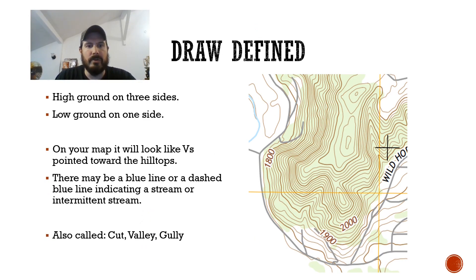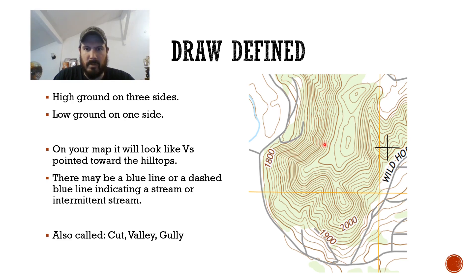Our next definition is going to be a draw. As we're standing on the ground you're going to have high ground on three sides around you and low ground on one side. We're still going to use a V to find it on the map, but this time the V's will be pointing towards the hilltops — high ground running here with V's on this side, this side, or swooping V's pointing towards the high ground. It could also be called cuts, valleys, or gullies, but we'll be using the term draw.